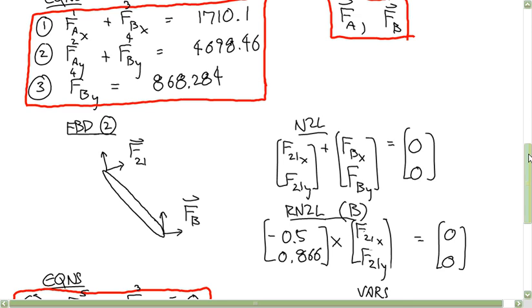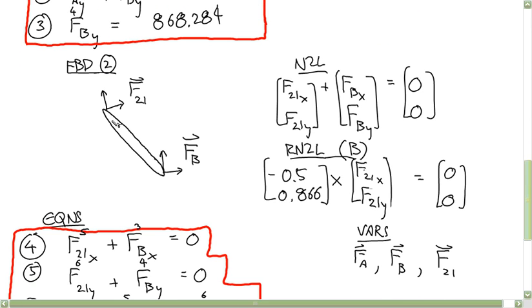By the way, if you want to find shortcuts, this is a two-force member. You could treat this as just a scalar force going that direction and equal and opposite force over here. It cuts down the number of variables.